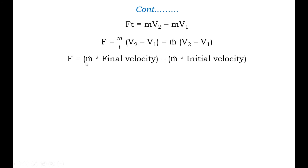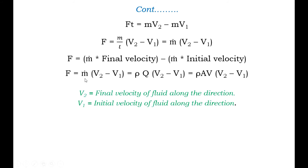So F is equal to M-dot into final velocity minus M-dot into initial velocity. Further simplifying, F is equal to rho into Q in bracket V2 minus V1, where Q is the flow rate. Substituting Q equals A·v, we get F equals rho·A·v·(V2 minus V1), where V2 is the final velocity and V1 is the initial velocity of the fluid along the direction.